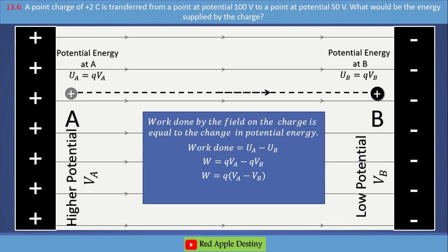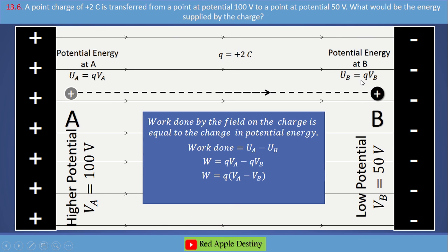The question: a point charge of plus 2 coulombs is transferred from a potential of 100 volts to a potential of 50 volts. What would be the energy supplied to the charge? The charge moves from high potential (100V) to low potential (50V).